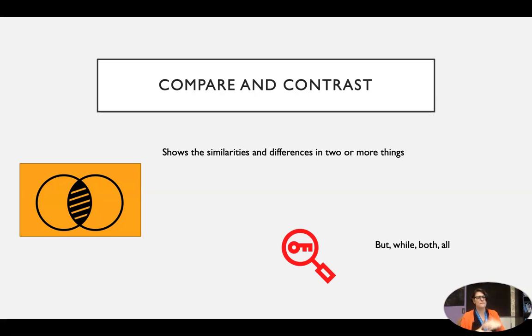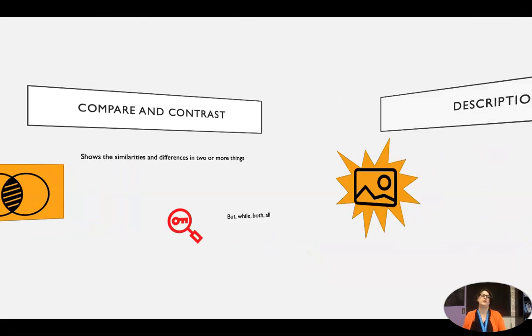Some keywords to be on the lookout for: but and while show differences, while both and all can show the same, the similarities we're looking for.